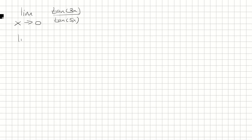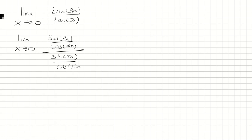So let's rewrite this in terms of sine and cosine. Tangent 3x is sine 3x over cosine 3x, and tangent 5x is sine 5x over cosine 5x. Now we're going to multiply, so we get sine 3x times cosine 5x over cosine 3x times sine 5x.